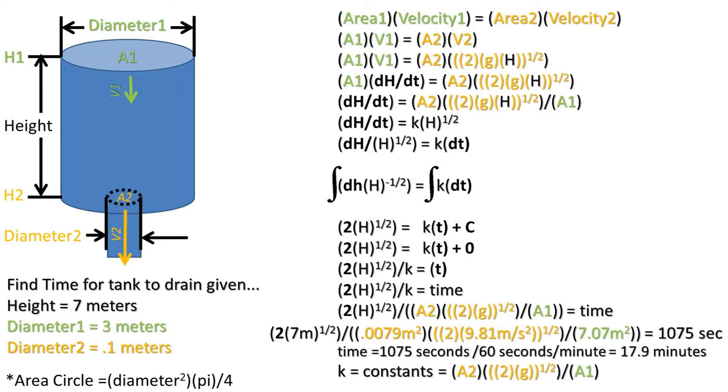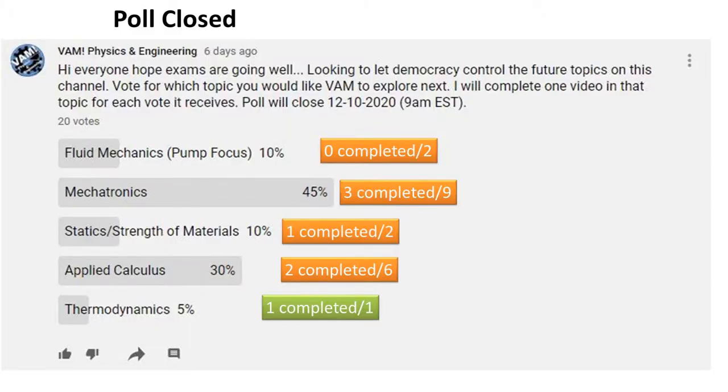Keep in mind this is an ideal example, so in reality it will probably drain slower. Here is a video tally for the closed poll that I put on my community tab. This adds one more video to applied calculus.